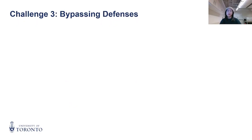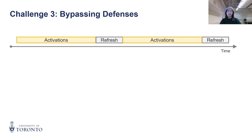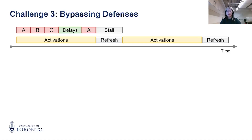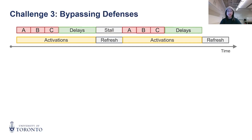A natural follow-up is: how much delay is needed? We can identify synchronization points using another timing trick. After each round of hammering, we insert additions to introduce controlled delays. The memory may stall mid-hammering for refreshes. As we increase the number of additions, the time it takes to hammer also increases.